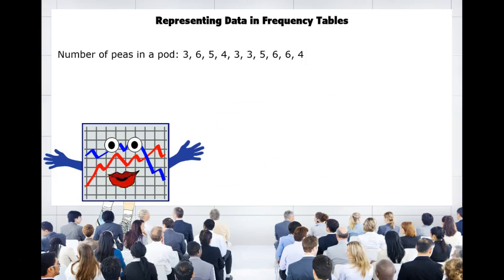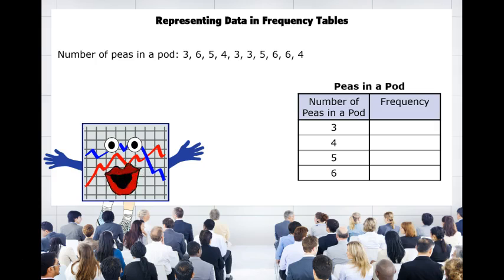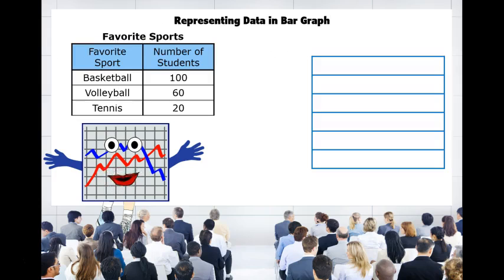Let's start with frequency tables. Frequency tables take data and put it into tables using tally marks to determine how many times a number appears in the data. Take this data set, for example. We're looking at the number of peas in a pod. Let's place these numbers in the frequency table using tally marks: three, six, five, four, three, three, five, six, six, and four. Frequency tables are useful because they let us look at our table and in just a glance be able to tell which number appears most frequently or least frequently.